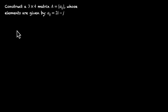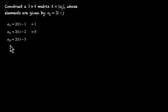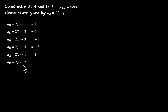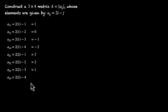Let's do them together. A11: 2(1) minus 1 = 2 minus 1 = 1. A12: 2 minus 2 = 0. A13: 2 minus 3 = minus 1. A14: 2 minus 4 = minus 2. Those are the elements of row 1. For the second row: A21 is 4 minus 1 = 3, A22 is 4 minus 2 = 2, A23 is 4 minus 3 = 1, and A24 is 4 minus 4 = 0.